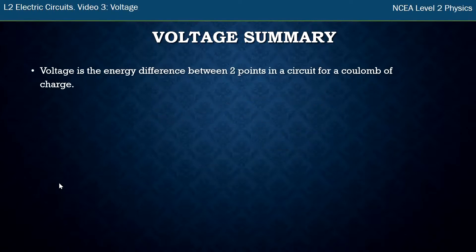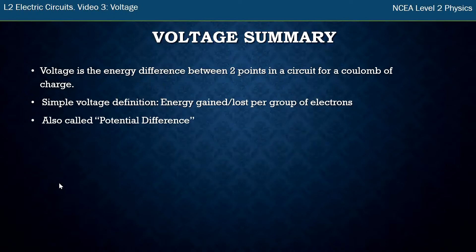So in summary, this video has shown you our definition for voltage, which is quite complicated, and so I have a simple definition. It's just the energy gained or lost per group of electrons. It's also called potential difference. It's called potential difference because you're always looking at the energy difference between two points in a circuit, either side of a component or either side of a battery. The definition has a formula as well, and that is energy per coulomb, which is what we had as a definition.